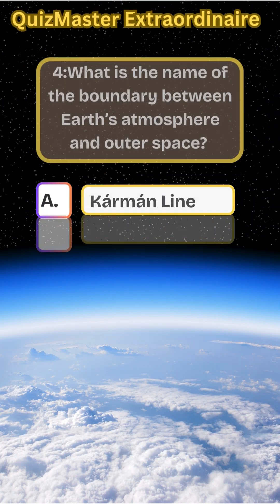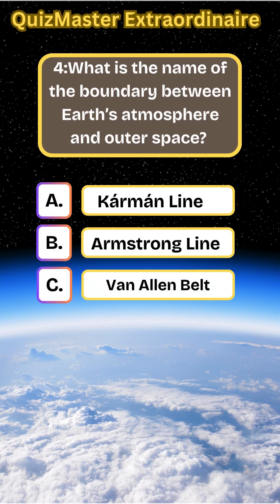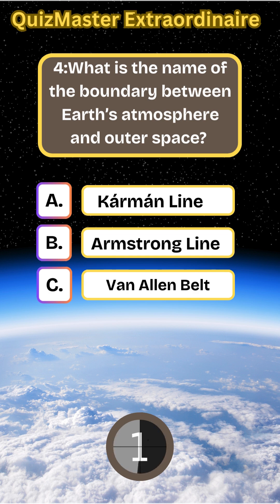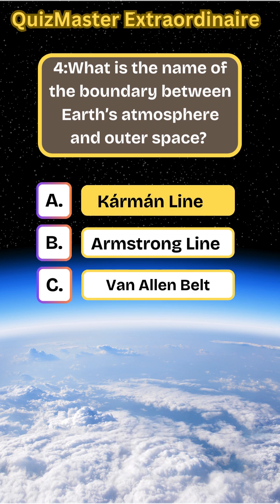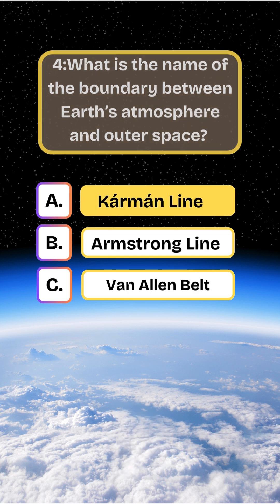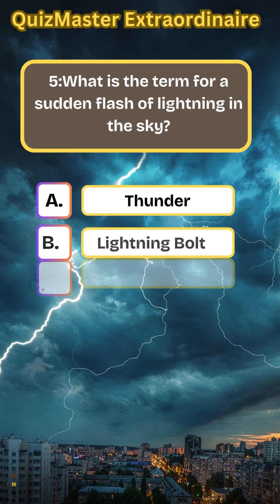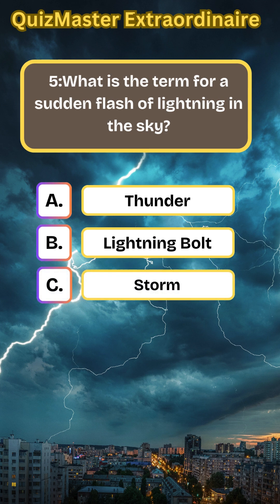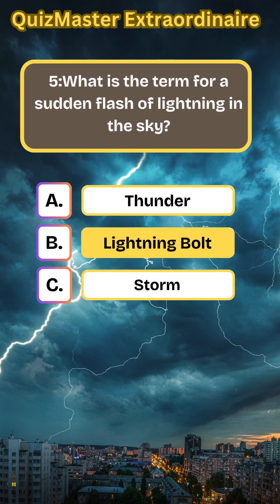What is the name of the boundary between Earth's atmosphere and outer space? The Kármán line. What is the term for a sudden flash of lightning in the sky? Lightning bolt.